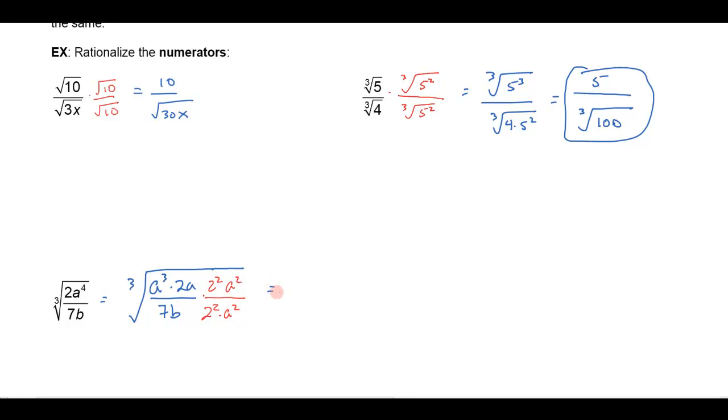So this is going to give me in the numerator, I'm going to get the cube root of a cubed times 2 cubed, and then I'll have another a cubed. In the denominator, I'm going to get the cube root of 7 times 4 times a squared times b.